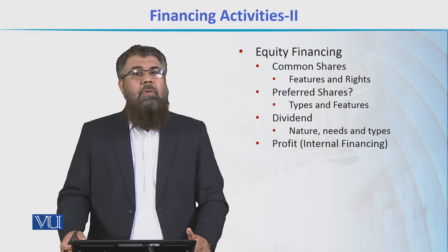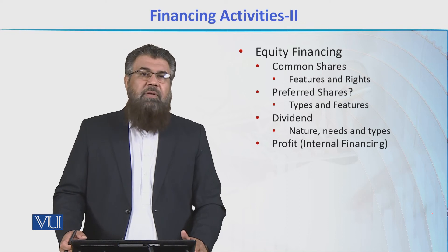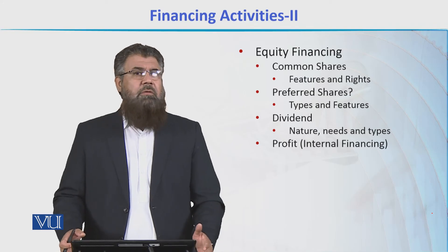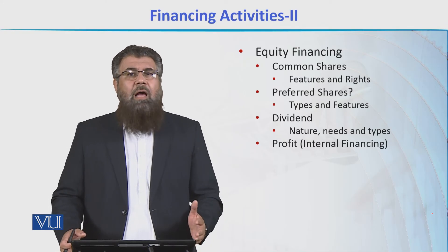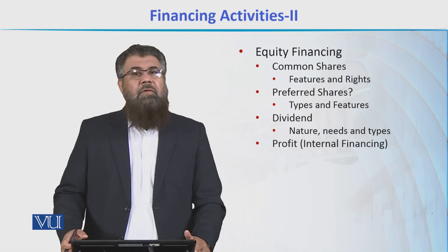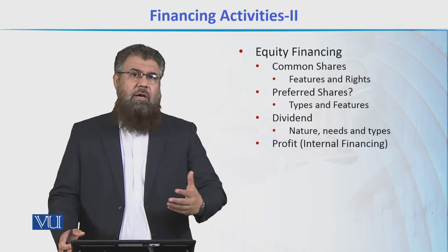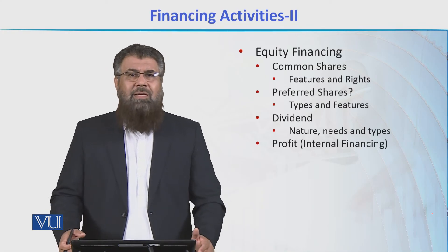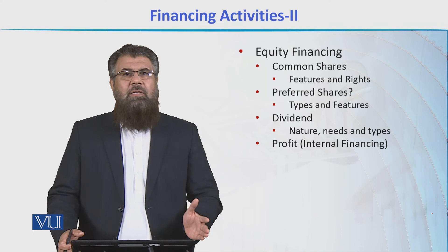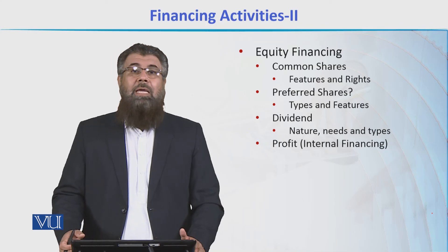Both common and preferred shareholders get profit in the form of dividend — we call it the distribution of profit in the form of dividend. Dividends are annual dividends. Once the profit is calculated and the company knows how much amount is to be paid to the shareholders, they give dividend. We have a full-fledged topic on dividend policy in our course of financial management and will discuss it in detail later. But here, what I want to mention is that dividend is the distribution of profit, and it is annual.